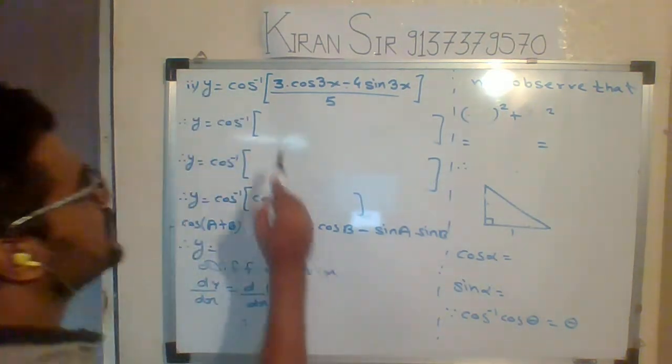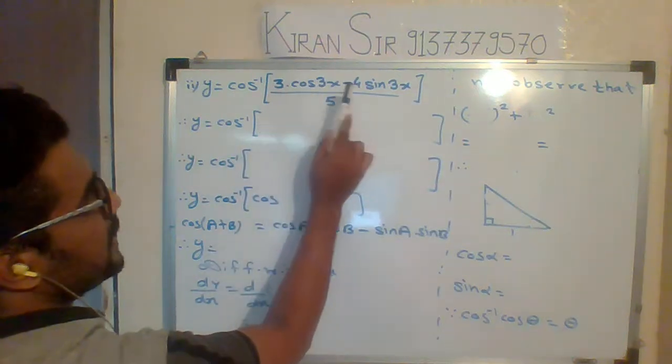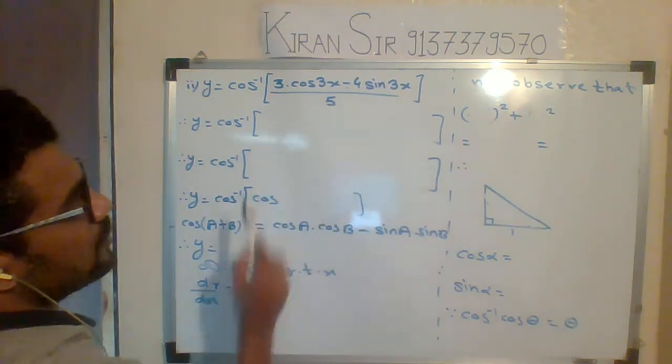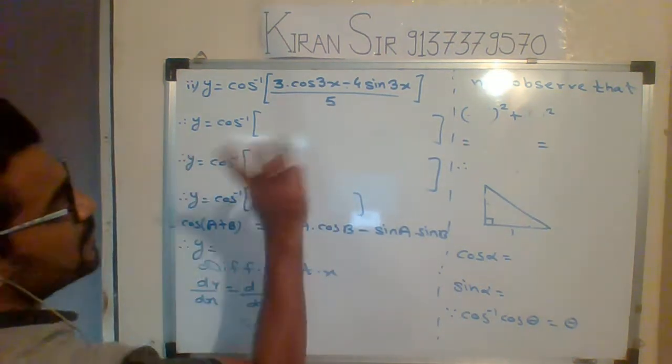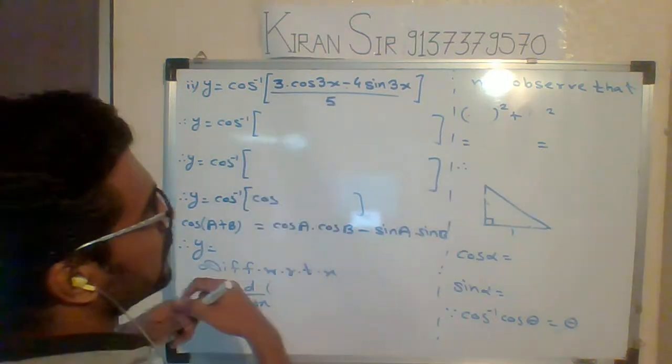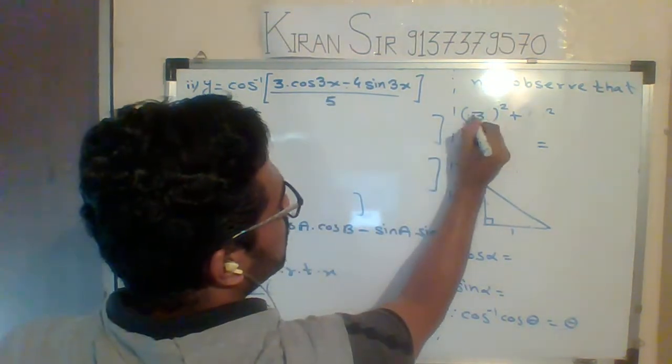So all of the concepts, the next numerical is cos inverse of (3 cos 3x minus 4 sin 3x) upon 5. So here we observe three numbers: 3, 4, and 5. If you observe that the square of...